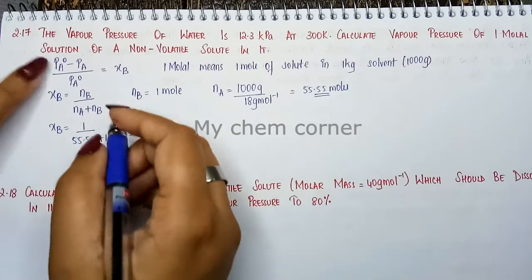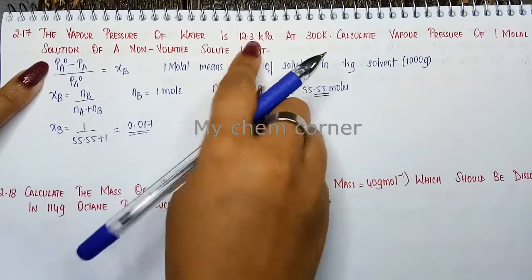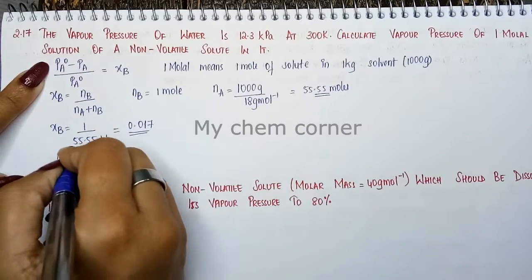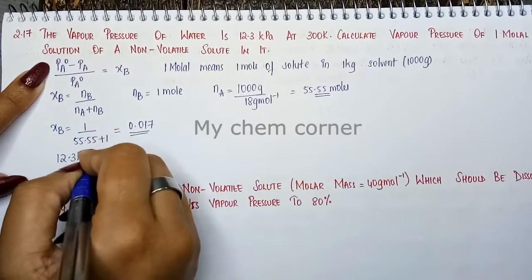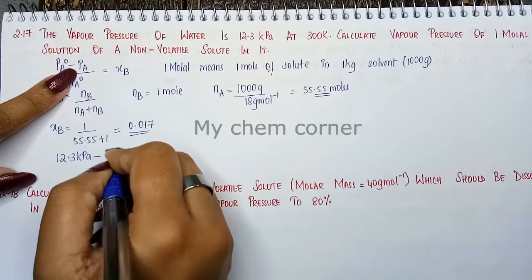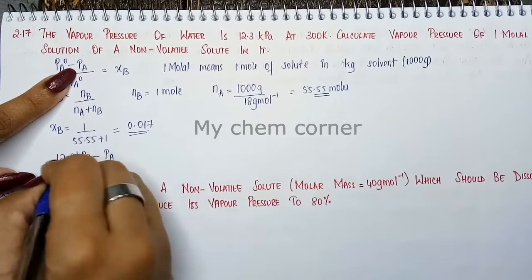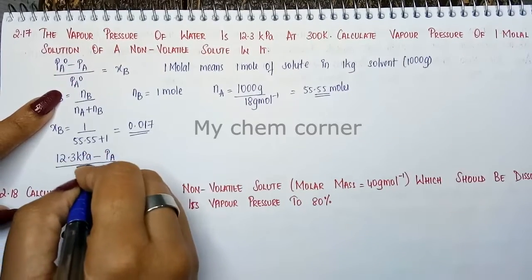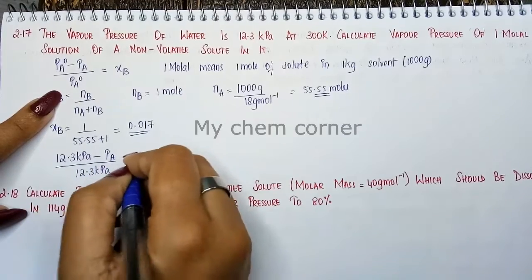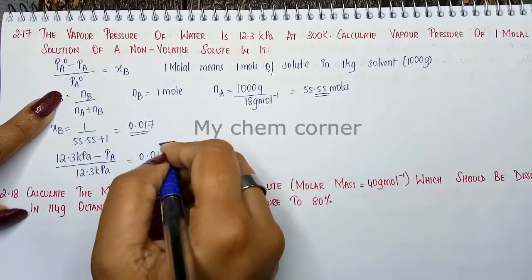So here, let us substitute the values. P_A0 is in the question, that is 12.3 kilopascal minus P_A is what we have to calculate divided by P_A0 is same, 12.3 kilopascal equals 0.017.